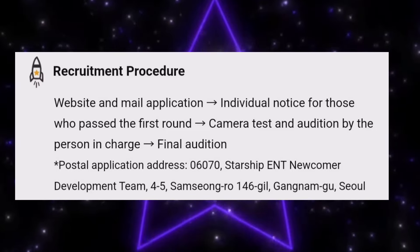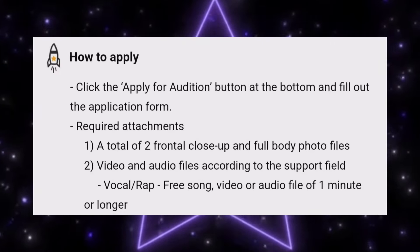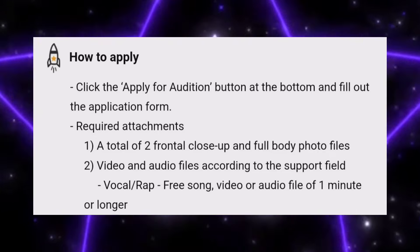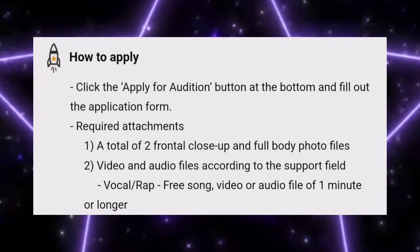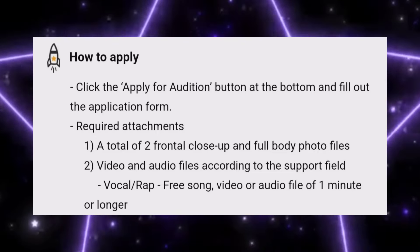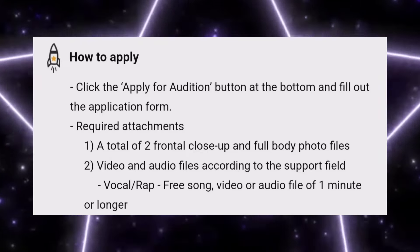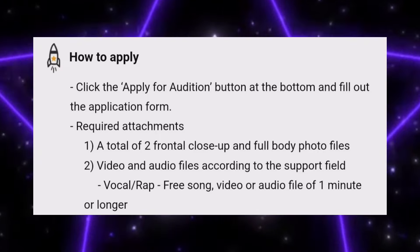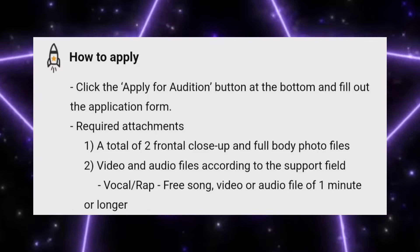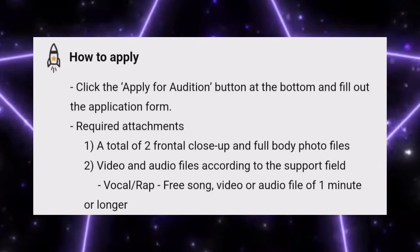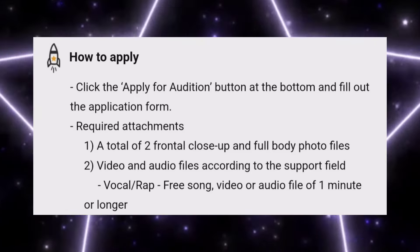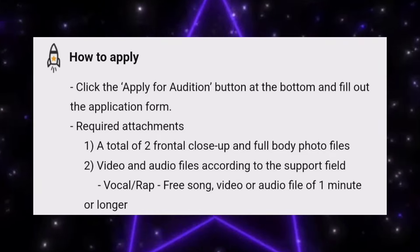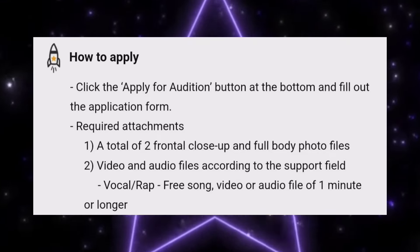Website audition is very easy and simple to apply. You just need to attach two to three photos — a front face photo, upper body photo, and full body photo. You also need to record your vocal, rap, dance, or appearance category video. For vocal and rap, a free song audio or video file should be under one minute. If you upload a video under one minute or around one minute, it's enough for your audition video.